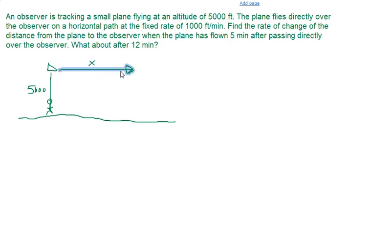So if we call this distance x, we are being told that dx/dt is 1,000 feet per minute.